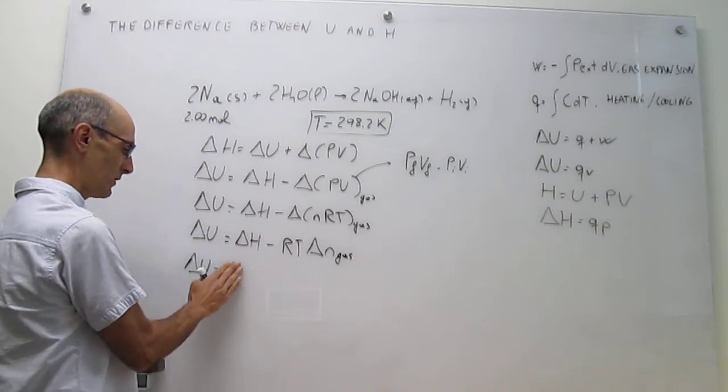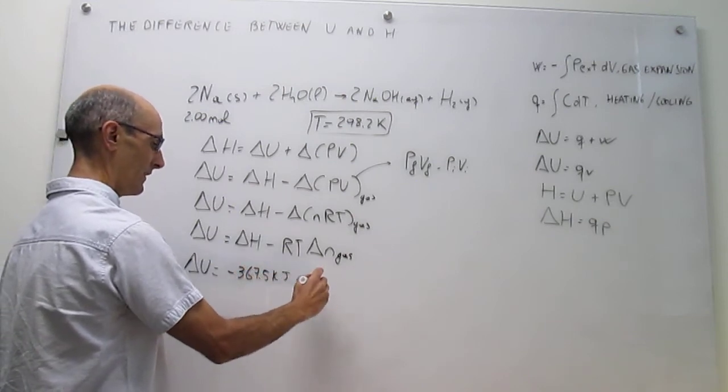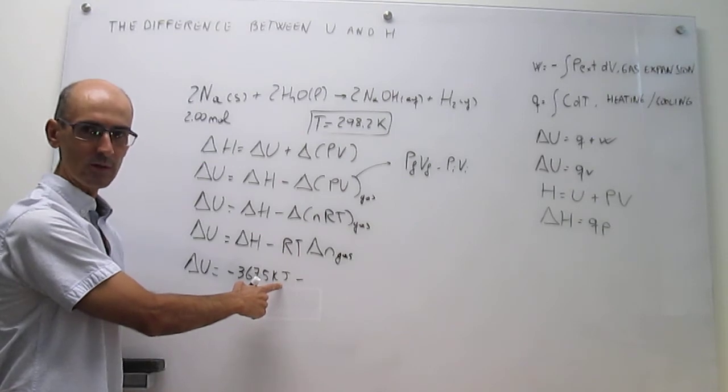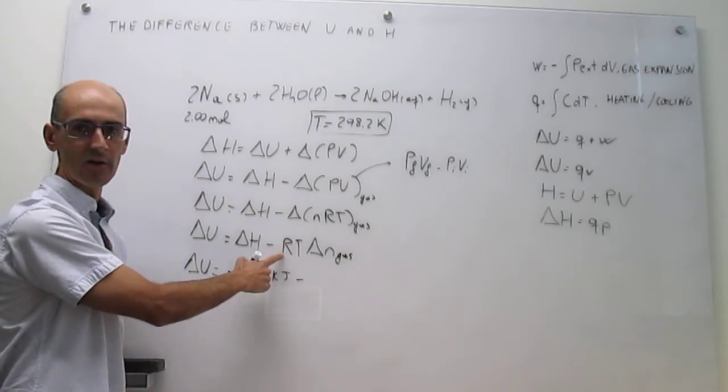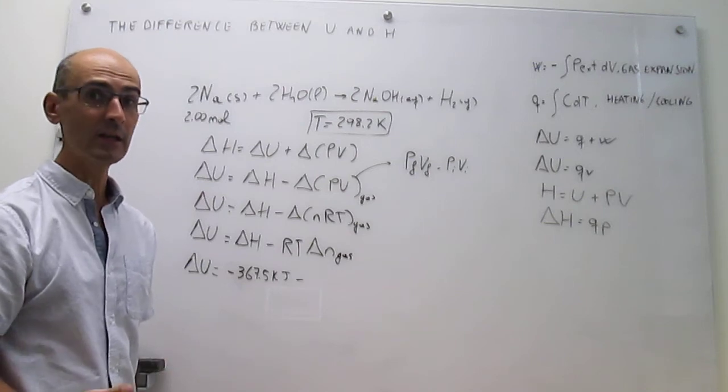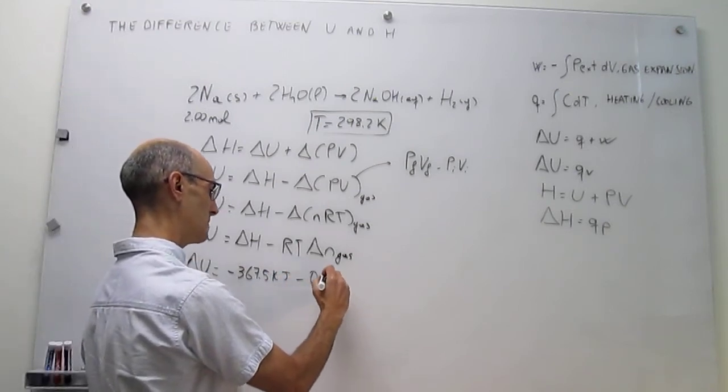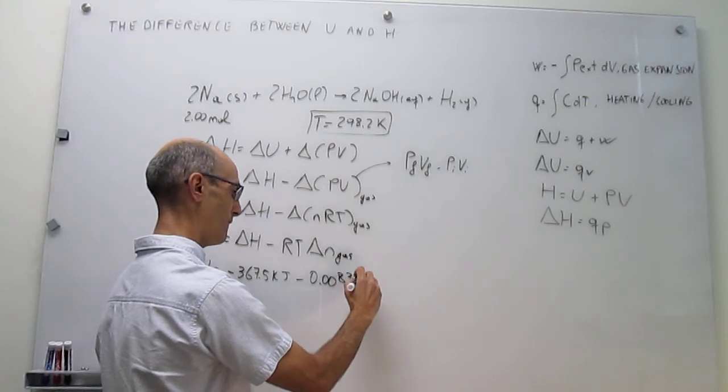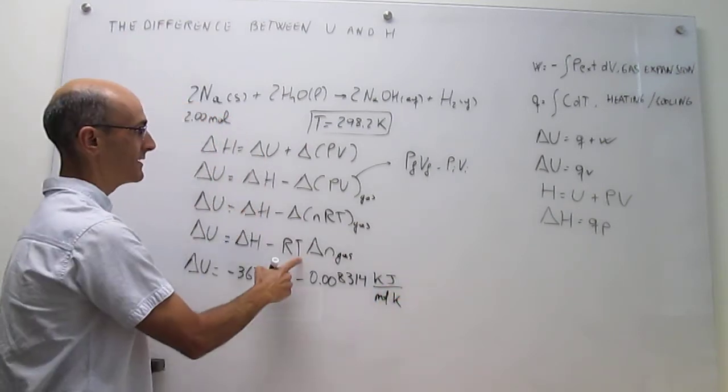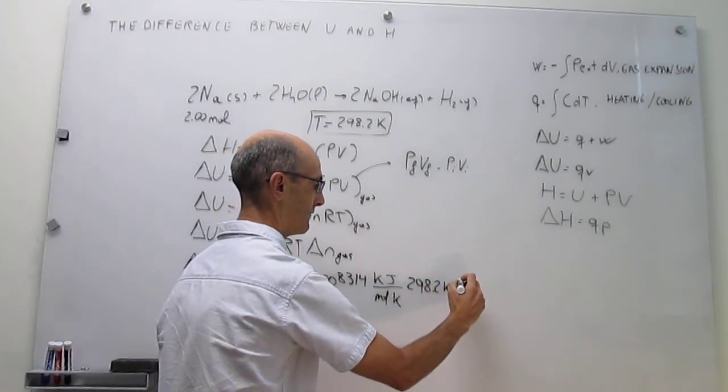We actually have everything we need here. That is going to be delta H, which we know is minus 367.5 kilojoules. Then we have RT and delta N of gas. R, notice that here we have kilojoules, so to use the same units, we are going to divide our R number, 8.314 joules per mole Kelvin, over 1000 to get R in kilojoules per mole Kelvin, so that the units match. That is going to be 0.008314 kilojoules per mole per Kelvin. Then we have the temperature, 298.2 Kelvin.